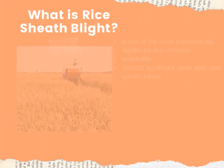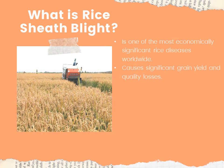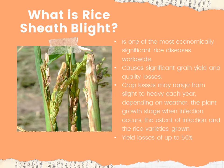Rice sheath blight is one of the most economically significant rice diseases worldwide. This disease causes significant grain yield and quality losses — yield losses up to 50% have been reported under the most conducive environments. Crop losses may range from slight to heavy each year, depending on the plant growth stage when infection occurs, the extent of infection, and the rice varieties grown.